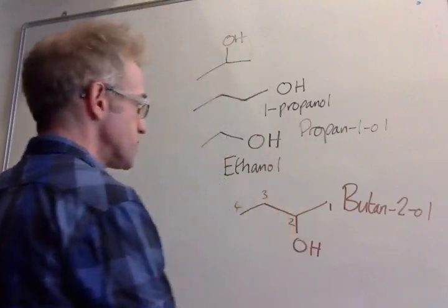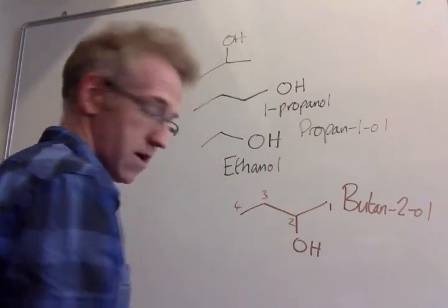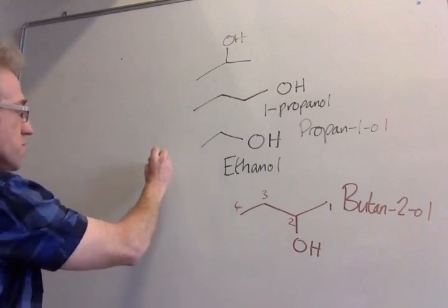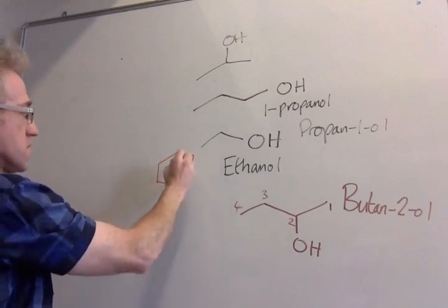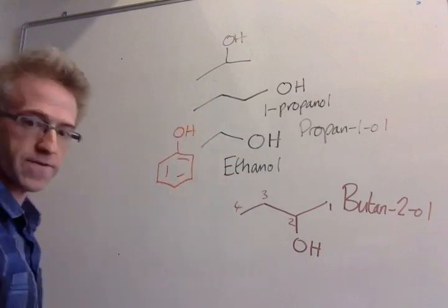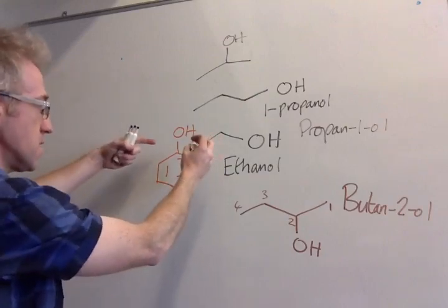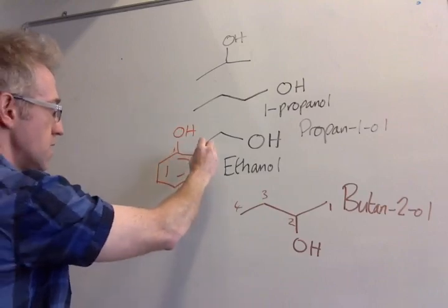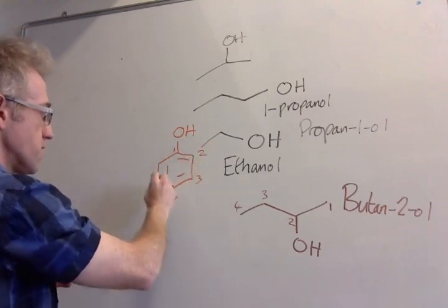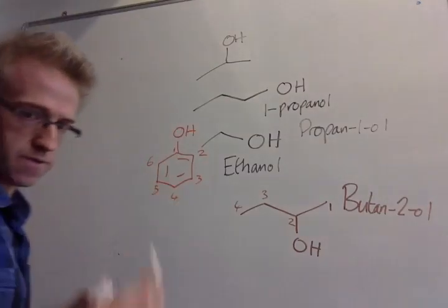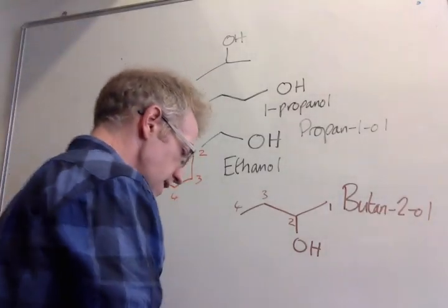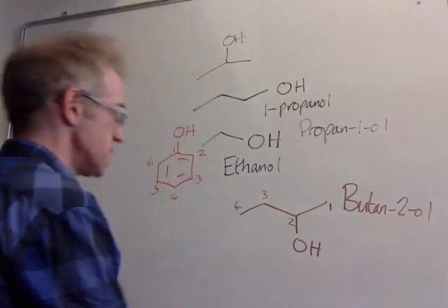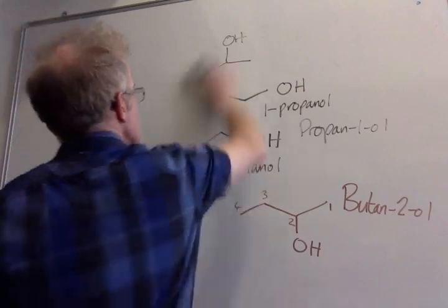Just one extra thing is that aromatic alcohols are called phenols. This is our phenol, and if we want to put substituents in here we number around the ring. So we put our OH in position number 1, and then around the ring 2, 3, 4, 5, and 6, and we just add in substituents to that.